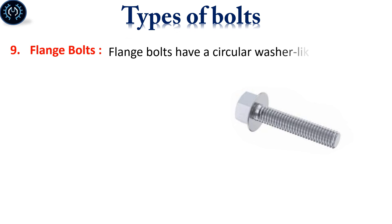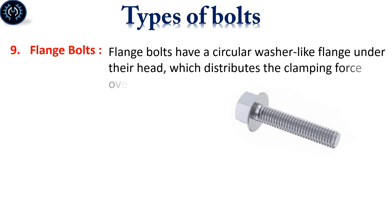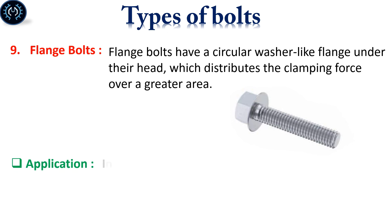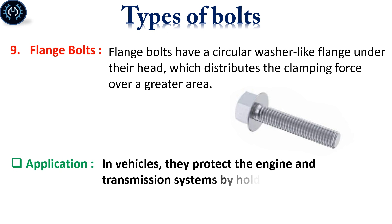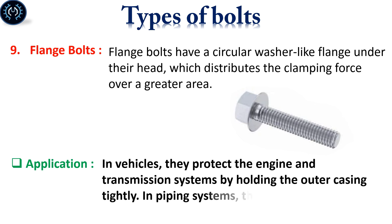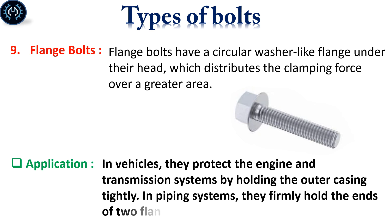Flange bolts have a circular washer-like flange under their head, which distributes the clamping force over a greater area. Flange bolts are used in vehicles to protect the engine and transmission systems by holding the outer casing tightly, and in piping systems they firmly hold the ends of two flange pipes together.